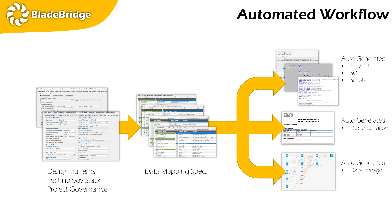When we go to execute BladeBridge, at a high level it produces three things. First, you have all of your code — it's going to dump into a network file location you've specified: ETL scripts, SQL scripts, scheduling jobs, Python scripts, and so on. In addition, it's going to auto-generate the documentation — nobody likes building documentation, but this actually auto-creates that for you. And then, in addition to that, it actually generates lineage. For all of the content that BladeBridge Studio produces, it will generate lineage for that content.